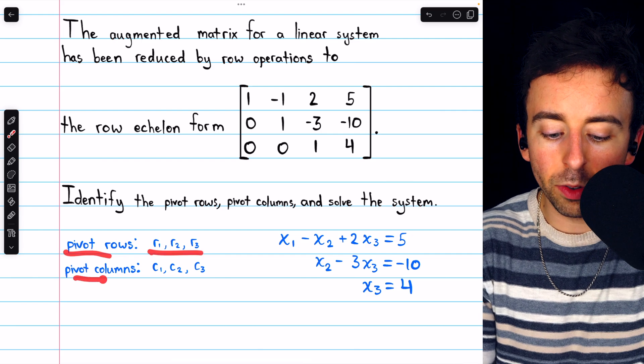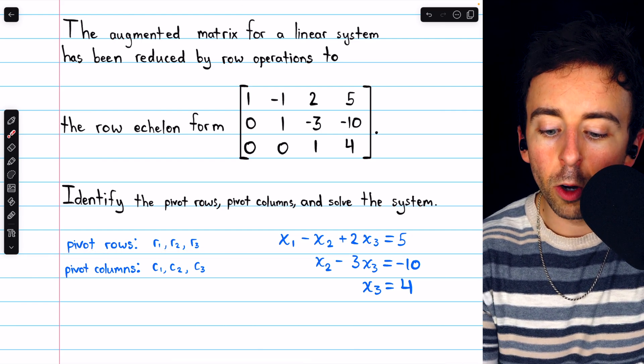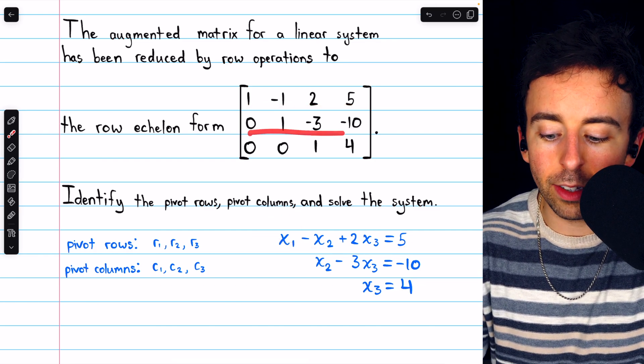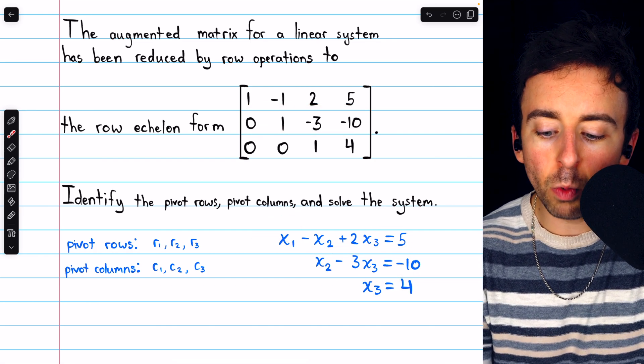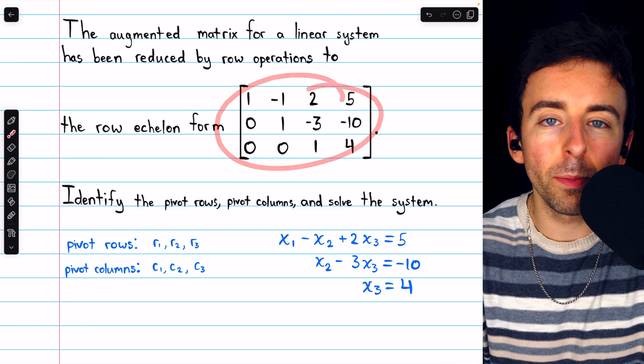So those are our pivot rows. Those are our pivot columns. Now we'll solve the system. Row 1 leads to this equation, row 2 leads to this equation, and row 3 leads to this equation.